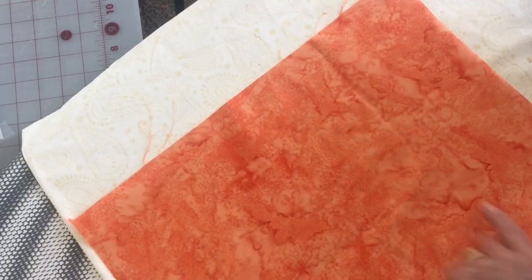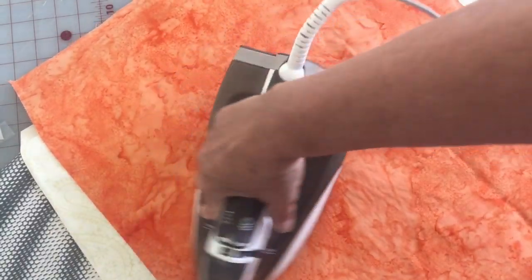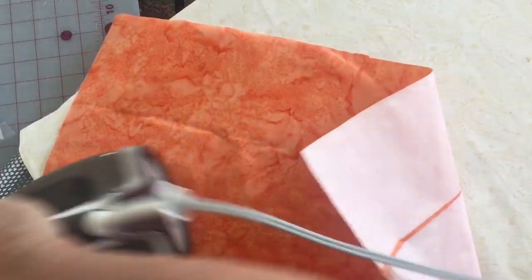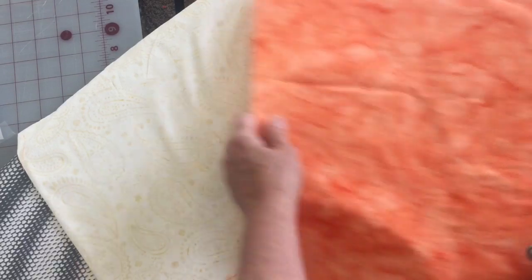This little ridge right here where we joined two pieces of fusible web will not matter. You won't see that. And I'm just squeegeeing so that all of the fabric and all of the edges have been pressed. And that's how you do it.